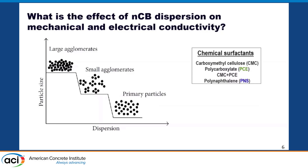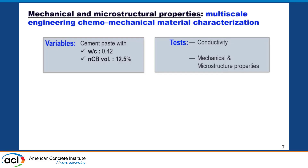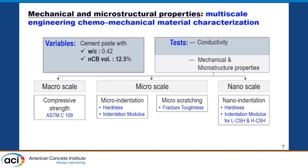Here we focus on using chemical surfactants. We used four types: carboxymethyl cellulose (CMC), polycarboxylate-based superplasticizer (PCE), a synergetic combination of cellulose and polycarboxylate superplasticizer, and polynaphthalene superplasticizer (PNS) with physical sonication. To investigate the trade-off between mechanical performance and conductivity, we used a chemo-mechanical multi-scale approach with a constant water-cement ratio of 0.42 and nano carbon black volume fraction of 12.5 percent — chosen to be above the percolation threshold.